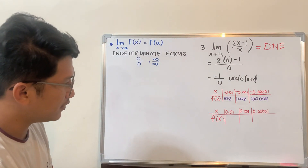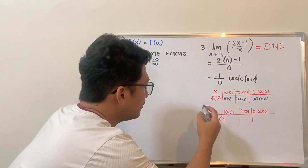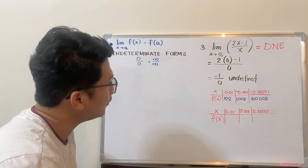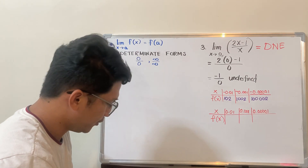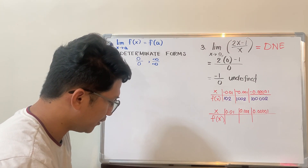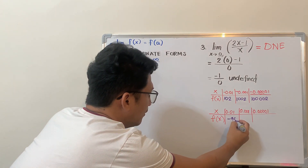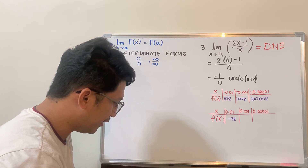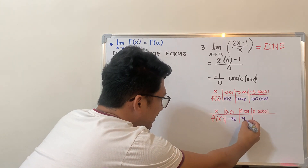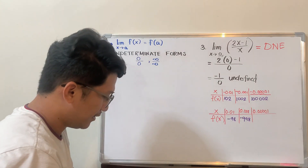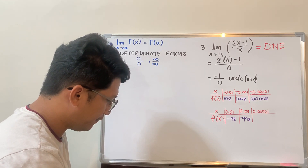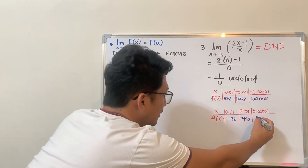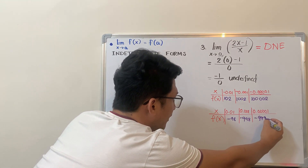Now for the right side: substituting 2 times positive 0.01, minus 1, all over 0.01 — the result is actually negative 98. Moving to the next value, the result is negative 998. Then, if you have 5 decimal places, you actually have negative 99,998.